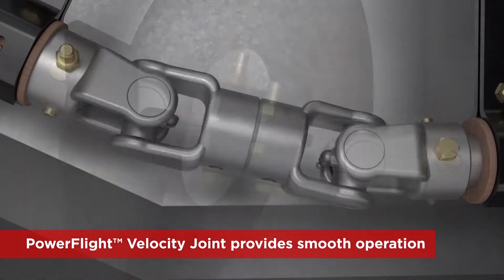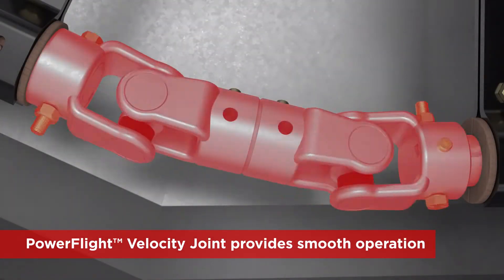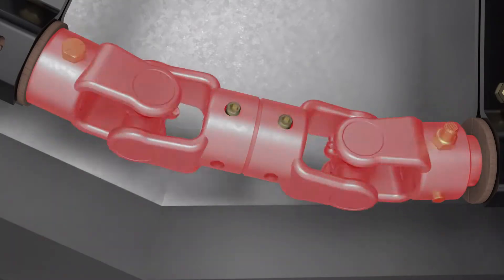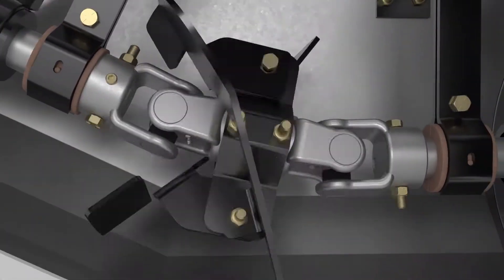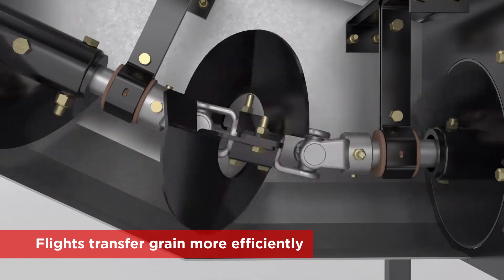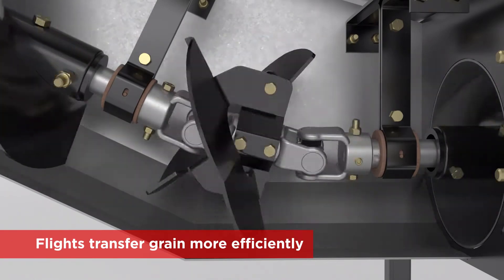The power flight velocity joint provides smoother operation, keeping auger shafts in sync and improving reliability. Its integrated flights transfer grain more efficiently.